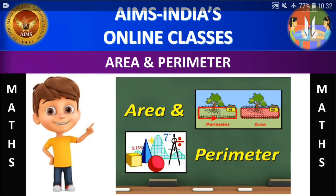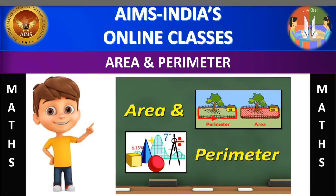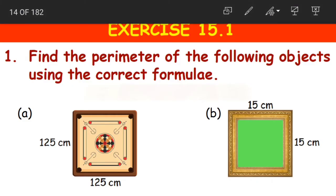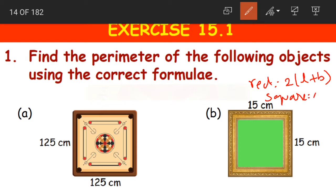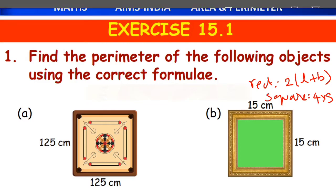Hello children, welcome to AIMS India's online classes. In the previous class we learned the formulas to find out the perimeter of a square and a rectangle. The formula for perimeter of a rectangle was 2 into L plus B, and to find out the perimeter of a square the formula was 4 into S. Now using these same formulas let us solve some exercises.